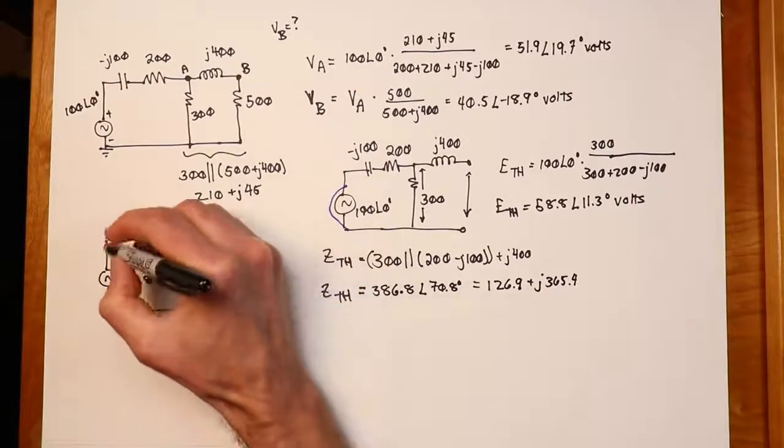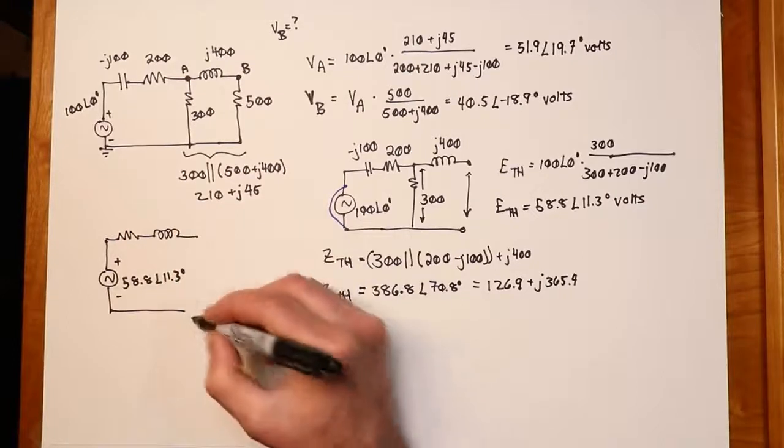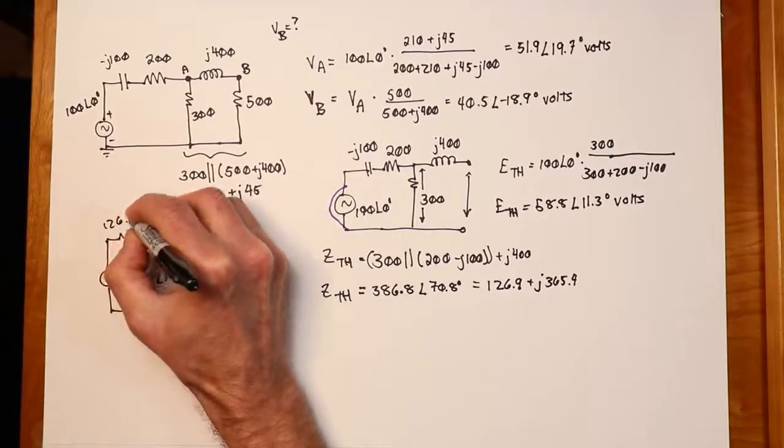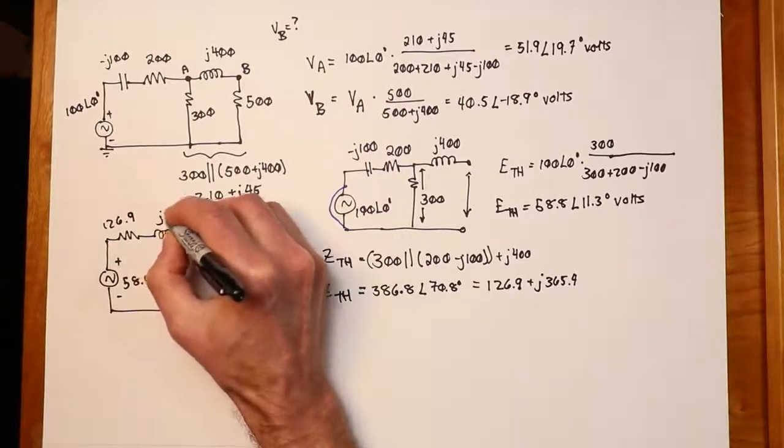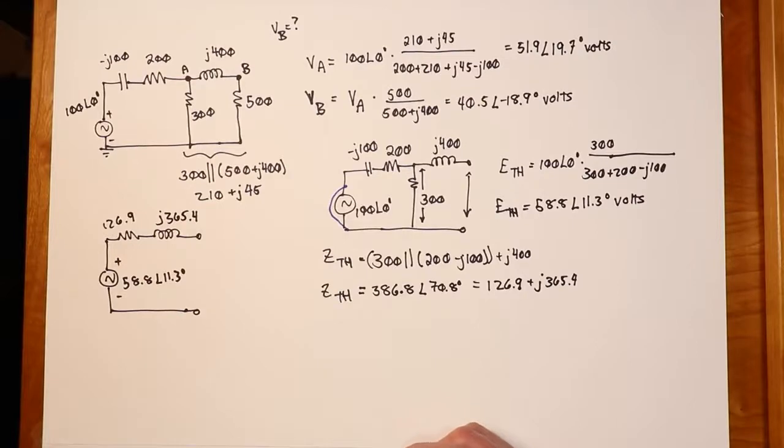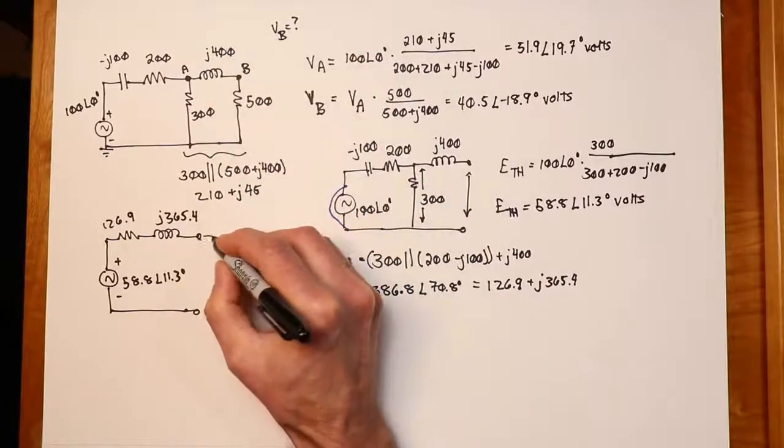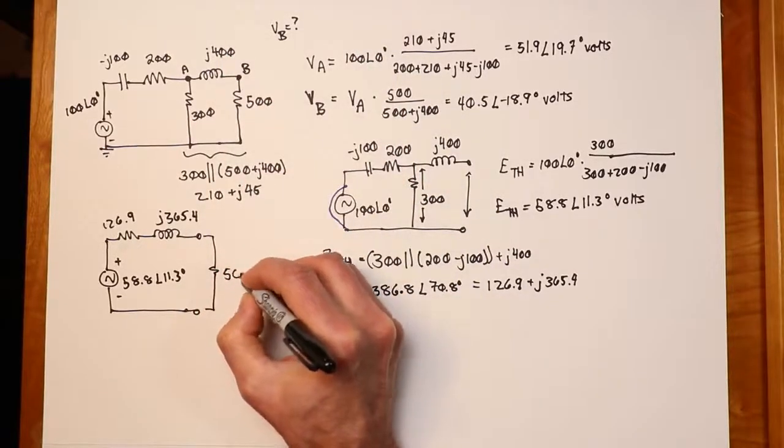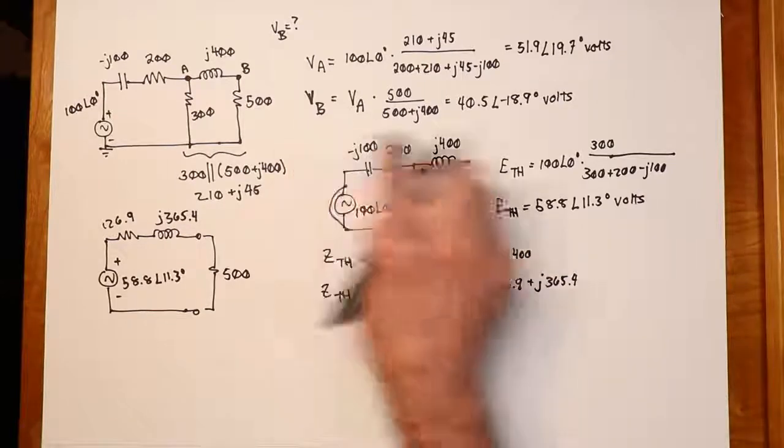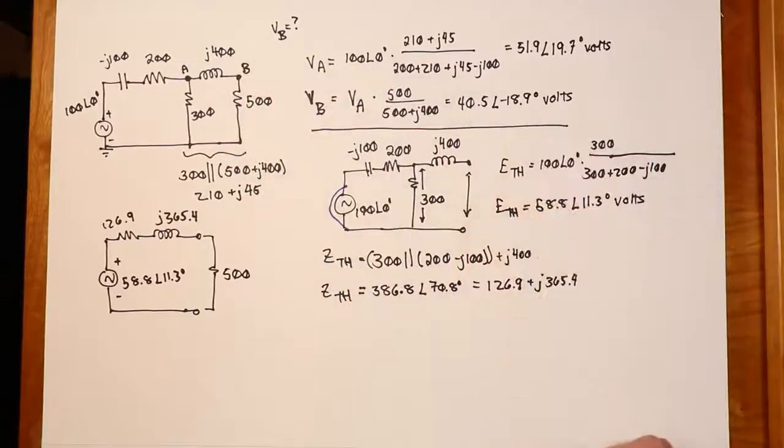So I can now finish my drawing over here. I now know this is inductive. So I'll just put these pieces back in. There's my 126.9 for the real part, the resistive part, and the j365.4 for the reactive part, the inductive part. So if I go back and take this 500 ohm and stick it back over here, when I compute what I wind up with for V500, it had better work out to what I did originally. In other words, it had better work out to the VB that we calculated at 40.5 at -18.9.